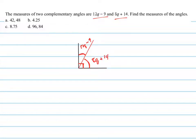It says find the measure of the angles. So what this means is 12q-9, that angle, plus 8q-14, that angle. If you add those two angles together, you'll get 90 degrees because that's what it means to be complementary. They add up to 90.